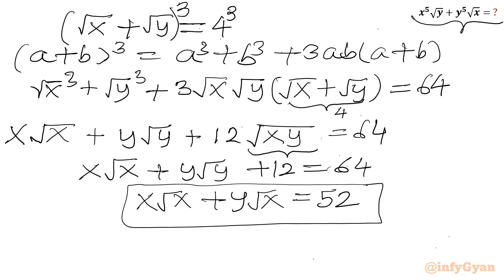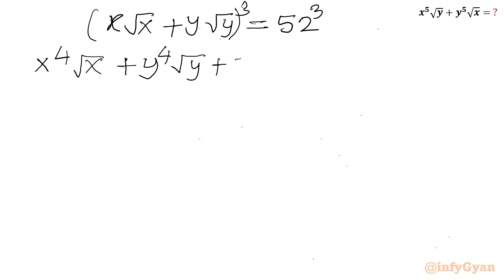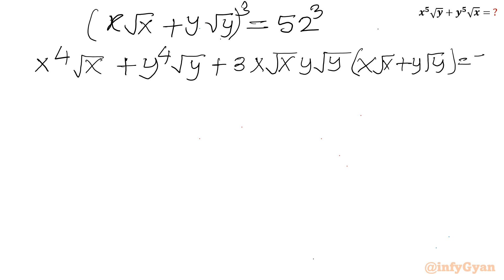So that value is not yet matching our expression. I will consider cubing once again. So I will write x root x plus y root y equals 52, and cube both sides. Again we will apply the a plus b whole cube formula. So a cubed this time: x root x cubed gives x to the power 4 times root x. Similarly cube of y root y will be y to the power 4 times root y, plus 3 times the product. So I have to write x root x times y root y times bracket x root x plus y root y, and RHS is 52 cubed.